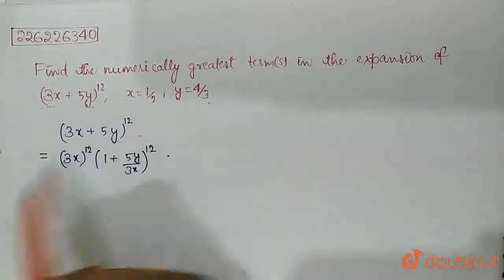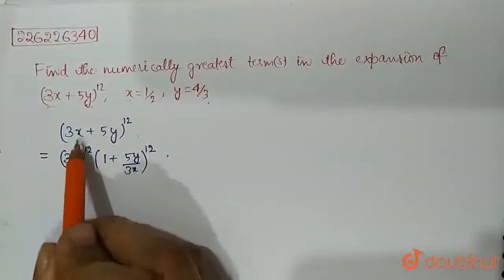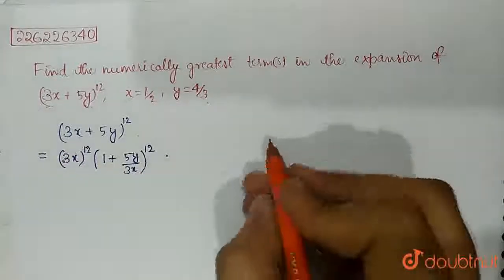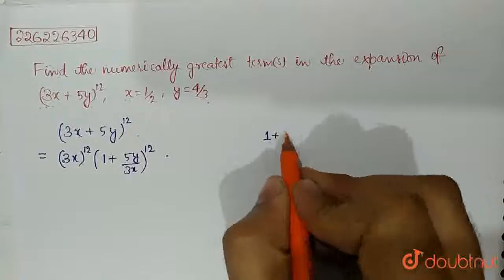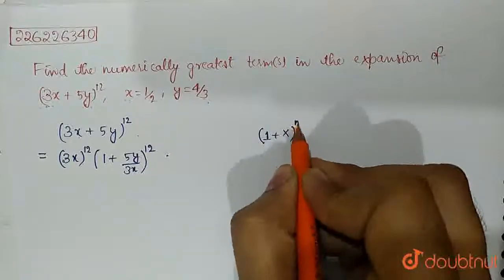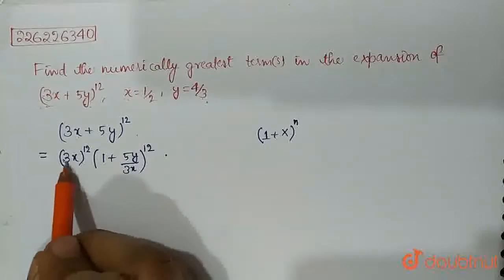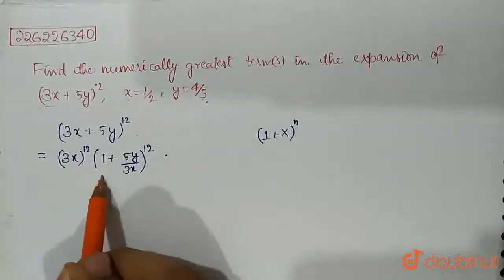So we write up this expression. We take out 3x as common out of this. So it becomes something like in the form of (1 plus x) raised to the power n. So we take out 3x as common and this becomes like that.